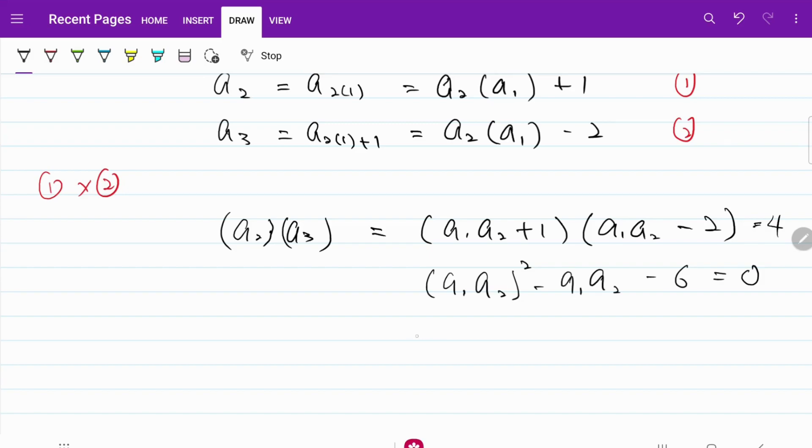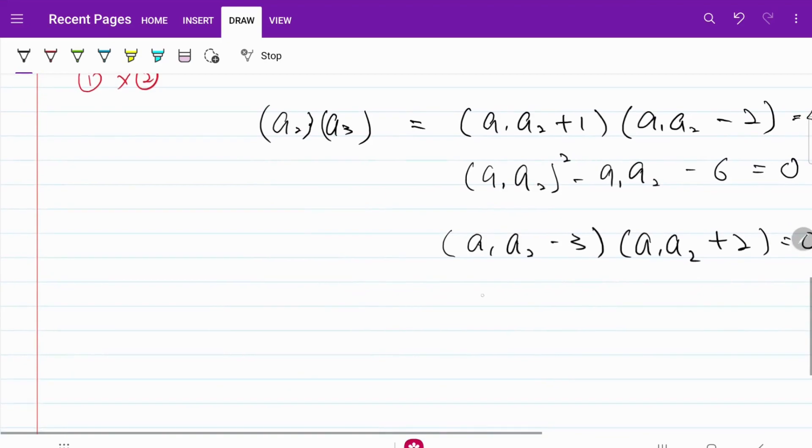From there, with simple factorization, I have (A1·A2 - 3) multiplied by (A1·A2 + 2) = 0. In other words, A1·A2 is either equal to 3 or equal to negative 2. Now the question is, can we accept both values?